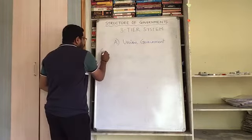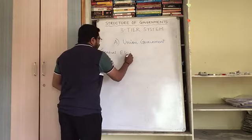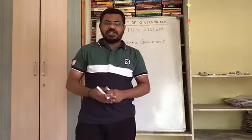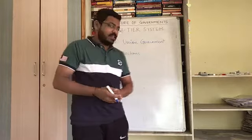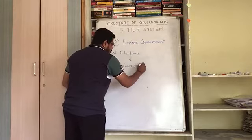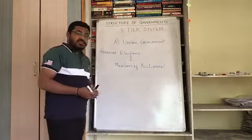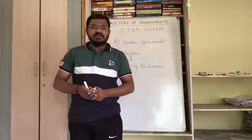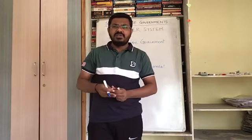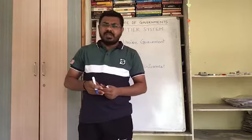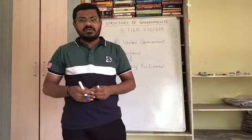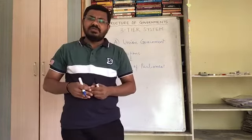The union government is formed through general elections. General elections are held in India every five years, in which members of parliament are elected. This is also known as Lok Sabha elections because it is held only for the Lok Sabha. Rajya Sabha is a permanent body whose members are not all subject to election every five years, but Lok Sabha has a five-year tenure.